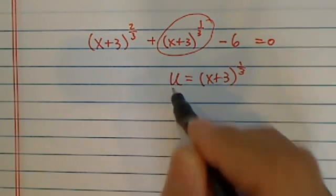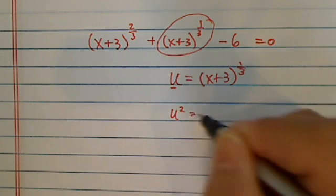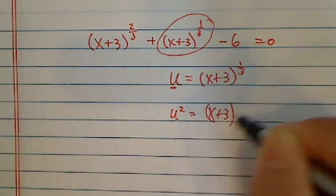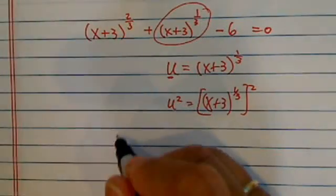x plus 3 is equal to a new variable called u. Then, u squared becomes x plus 3 to the 1 third, this whole thing squared, which happened to be the leading term. From here,